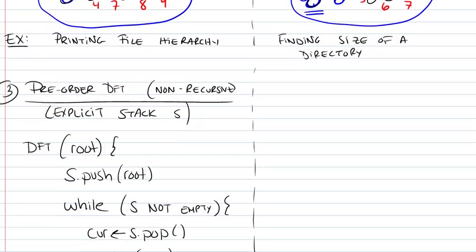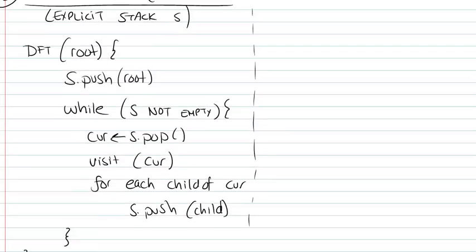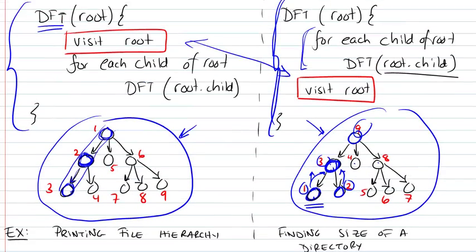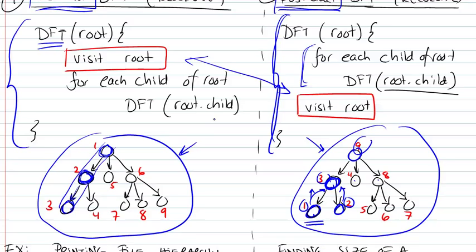We could also, if we wanted to, use an explicit stack and use a non-recursive implementation of the DFT. So in this case, when we talk about a recursive call, what Java is doing in the background is that every time you're calling a method, it's placing the parameters of that method onto a call stack.